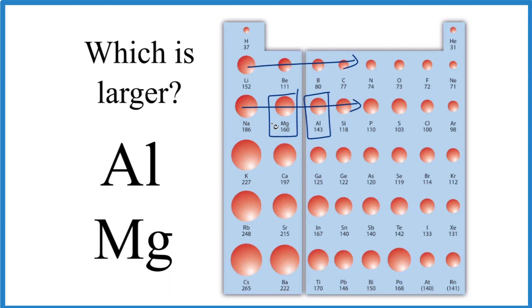So when we go from magnesium to the right on the periodic table to aluminum, we can see the atomic radius decreases. So to answer our question, when we compare aluminum and magnesium, magnesium has a larger atomic radius.